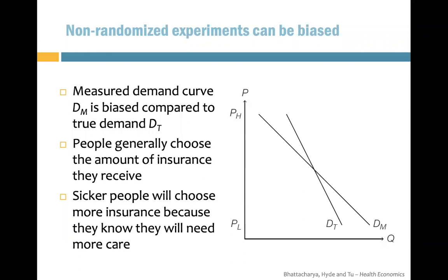It's important to have a randomized control trial because without it we might get biased results. For example, a young healthy person may face cheap healthcare prices but not get much care because they don't need it — low price, low demand. An old unhealthy person may use a lot of expensive healthcare — high price, high demand. That looks like an upward-sloping demand, and the reason is we did not randomize. We want to randomize people to different price levels, not let people select themselves into groups.